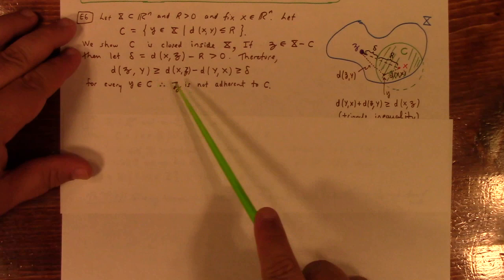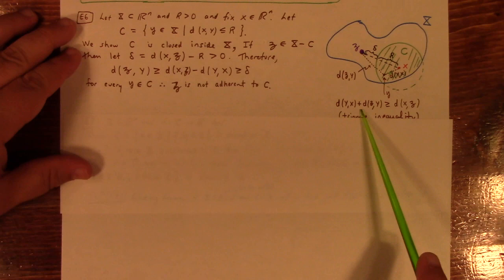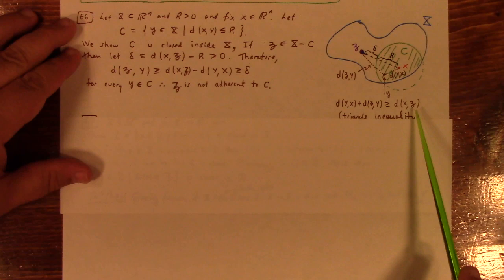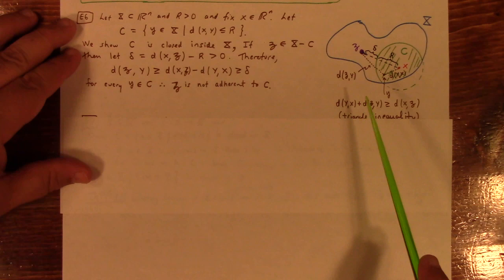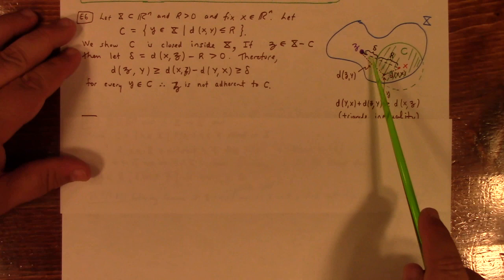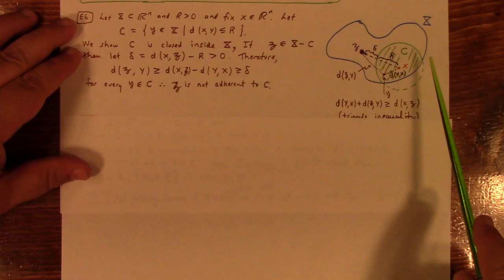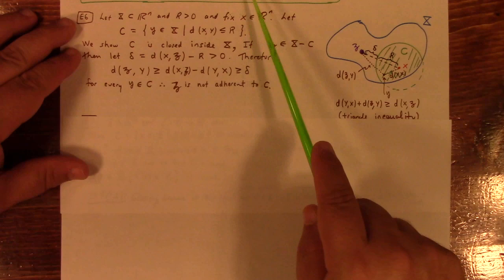Now, that's maybe not immediately obvious, but it becomes obvious if you just look at the triangle and apply the triangle inequality. You just subtract the distance from Y to X to the other side, and that gives you this. So, that then shows you that there's a delta which separates Z from, Z is not stuck to C. Z is not adherent to C, which is what we're trying to prove in order to show that it's closed. We're just working through that.